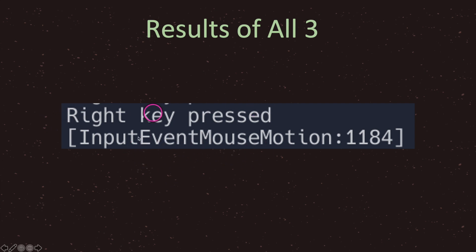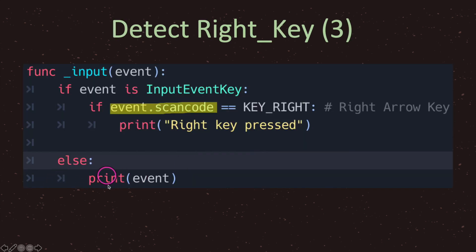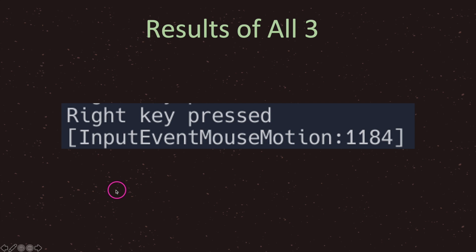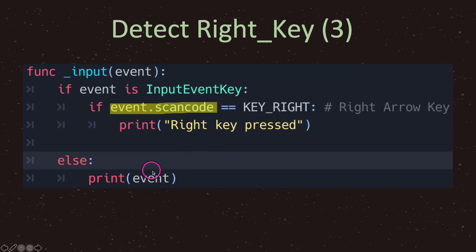When I press the right arrow key we print to the screen 'right key pressed.' When I move my mouse you'll see InputEventMouseMotion printed — that's the else statement output. This is one way we can write input detection from the player, specific to key presses. We can get as complex as we want, or make it easier — we'll look at that in a later episode using Godot's project settings for custom key input mappings.